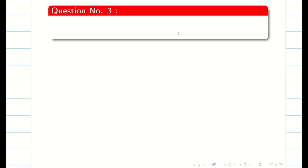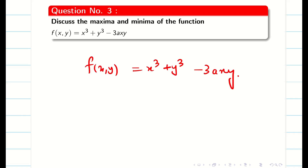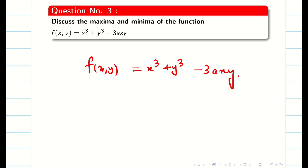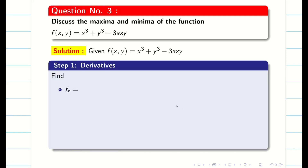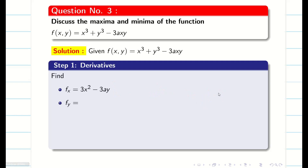Let us take a few more questions in this session. As usual, the problems consist of four steps. Let us go step by step. The given function is written in step 1. We are going to find the derivatives. My fx is going to be 3x² minus 3ay, since y is constant and differentiation of x is 1. Therefore, it is 3x² minus 3ay.